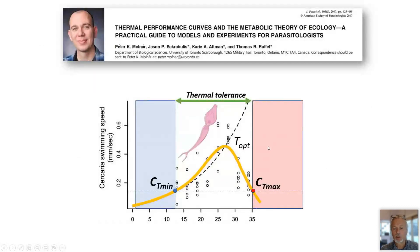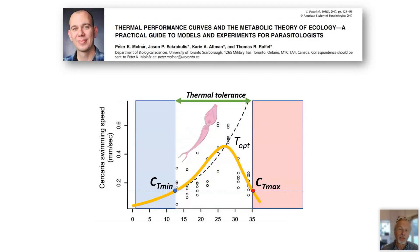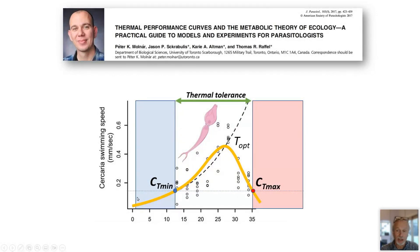Thermal performance curves have been derived to describe the metabolic, physiological, or demographic response of both the parasite and the snail to temperature. With this data, it's possible to identify critical thermal thresholds — that is, the minimum temperature at which, for instance, the cercaria are able to swim, and the maximum temperature at which they are also able to swim.